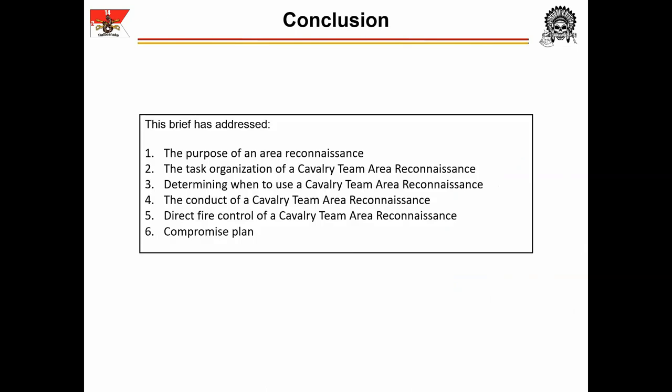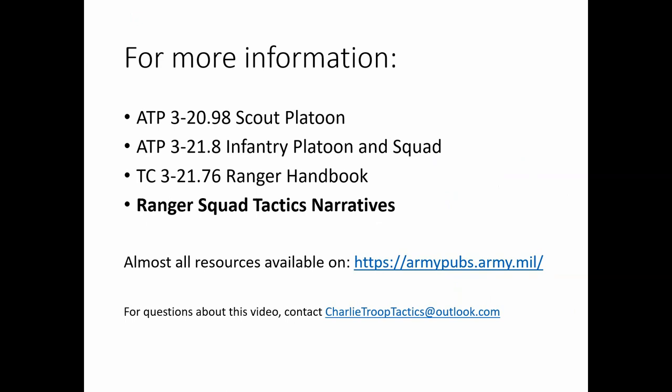In conclusion, this brief has addressed the purpose of an area of reconnaissance, the task organization of a cavalry team area of reconnaissance, determining when to use a cavalry team area of reconnaissance, the conduct of this reconnaissance, direct fire control in a cavalry team area of reconnaissance, and the compromise plan. The following resources were used in preparing this presentation. Send any questions or comments to charlietrooptactics at outlook.com.